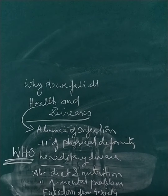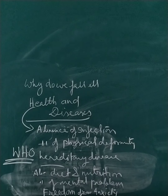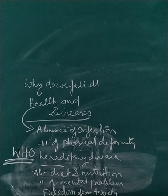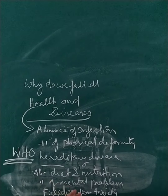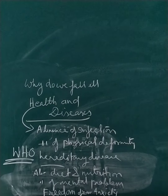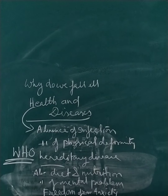Other significant health problems include diseases we contract when in overcrowded conditions — such as cold, cough, pneumonia, and tuberculosis. Diseases can also be transmitted through vectors. A vector is a carrier of disease, and if vectors are more prevalent in our society, we may contract disease.